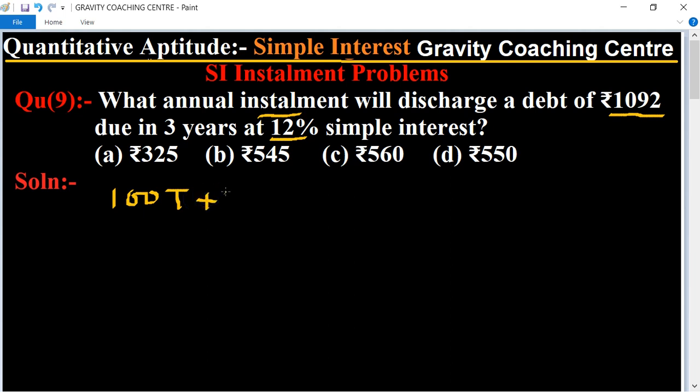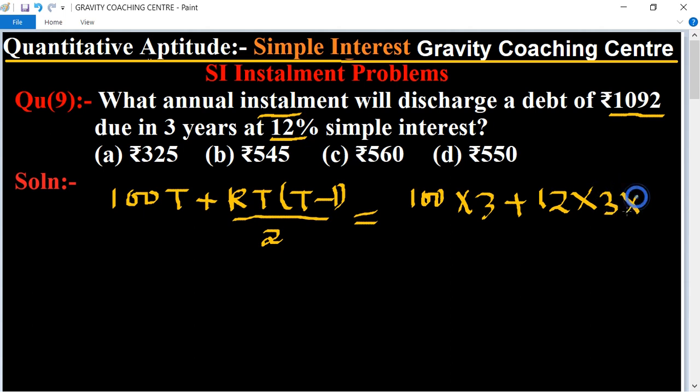Plus R into T times (T minus 1) upon 2. And its value is 100 times 3 years plus 12% into 3 times (3 minus 1) upon 2. So this will become 2 upon 2. The 2s cancel.